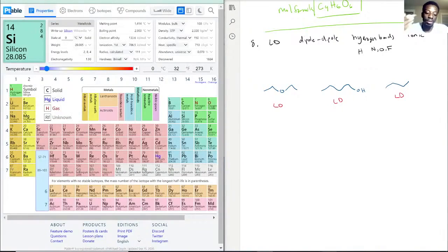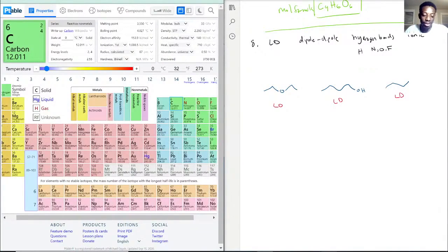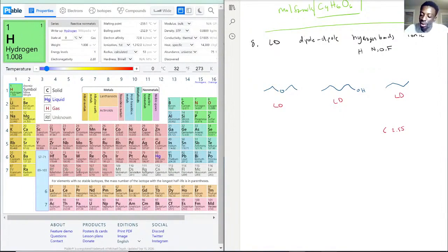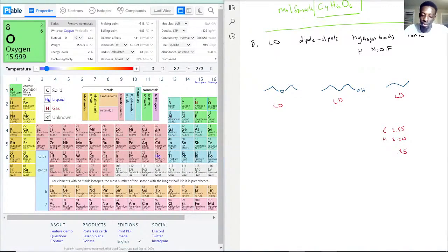For dipole-dipole, we look at our electronegativity sheet. Carbon electronegativity is 2.55, and H is 2.20. That difference is only 0.35, not enough to form a dipole-dipole. You need a polar covalent bond. But this oxygen has an electronegativity of 3.44, which is significantly higher—about 0.89 difference. It's definitely considered a polar covalent bond. So here you can say this also has dipole-dipole.